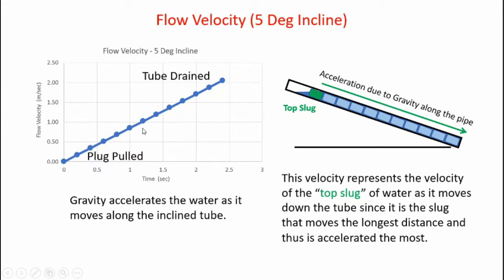Here's the flow velocity in meters per second plotted against time. Because acceleration due to gravity is constant, I get a nice straight line between when I pull the plug at 0 flow velocity up to about 2.0 meters per second when the tube finally drains.